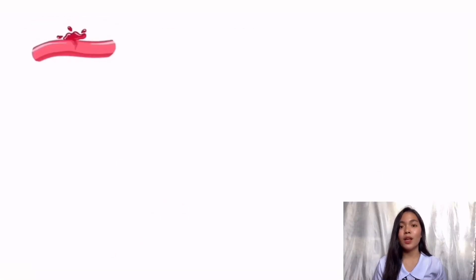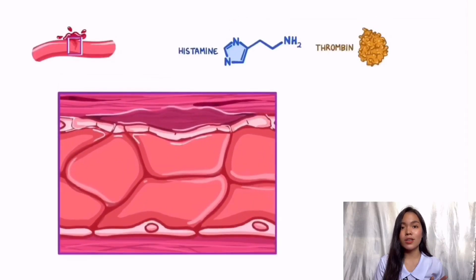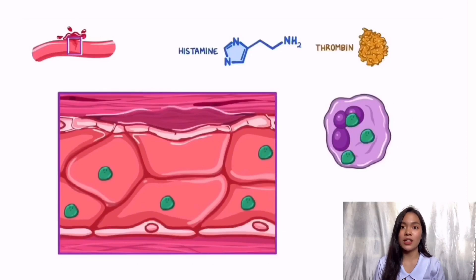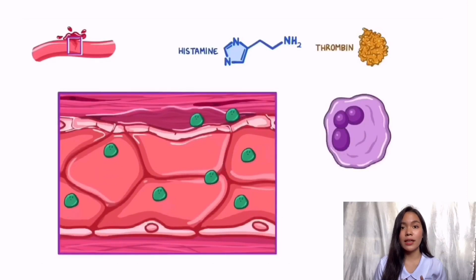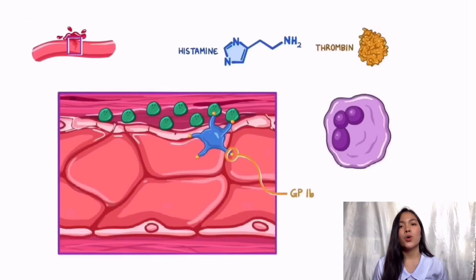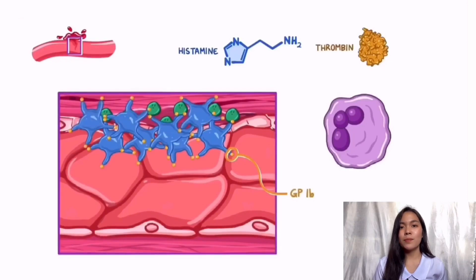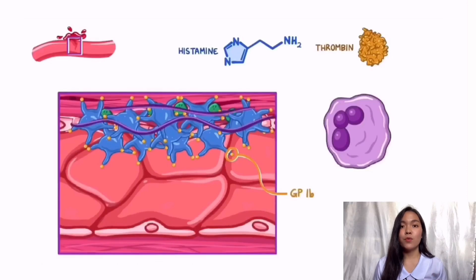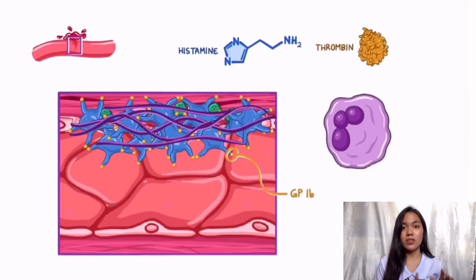When there's a bleeding injury to a blood vessel, histamine and thrombin stimulate the local endothelial cells and megakaryocytes to release the von Willebrand factor into the bloodstream. After its release, it attaches to the exposed collagen fibers in the wall of injured blood vessels, where it serves as a glue-like substance that sticks to platelet receptors known as glycoprotein-1b, or GP-1b. Within the bloodstream, more von Willebrand factor starts to bind more platelets together into a mass, over which fibrin fibers deposit, forming a clot needed to plug the injured vessel and stop bleeding.